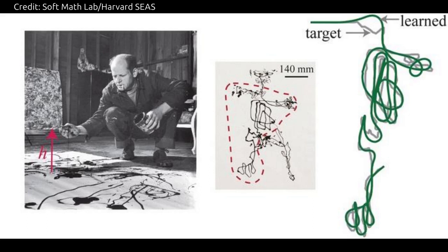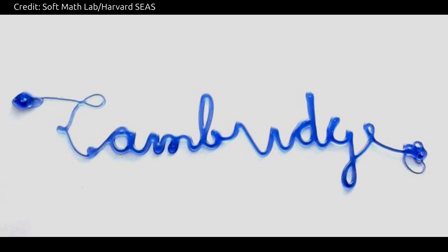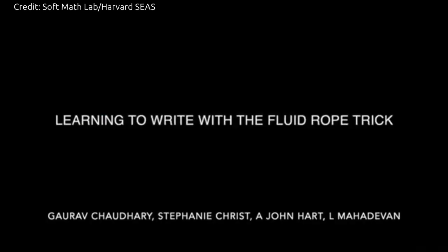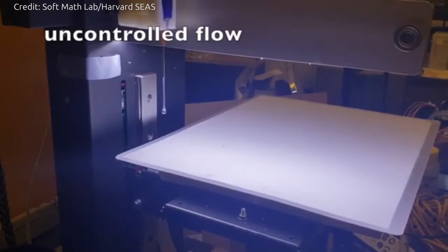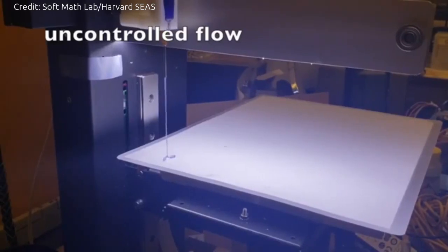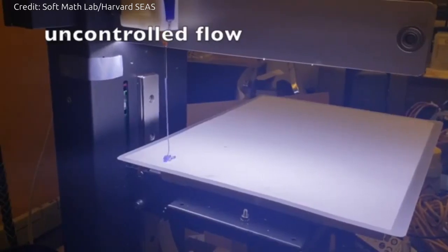Today, most 3D and 4D printing techniques place the print nozzle millimeters from the surface, all but eliminating the dynamic instability of the liquid stream. But Mahadevan has a motto—use the physics and stop avoiding it. The researchers wanted to develop a technique that could take advantage of the folding and coiling instabilities, rather than avoid them.